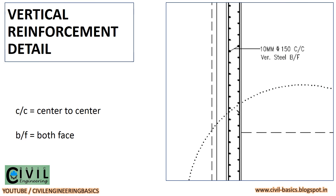By viewing the other part of the drawing, we found the details of vertical reinforcement. Vertical reinforcement is given as 10 mm diameter with 150 mm center to center on both faces — inside and outside face. We have now obtained both vertical reinforcement detail and horizontal reinforcement detail of Corner A.